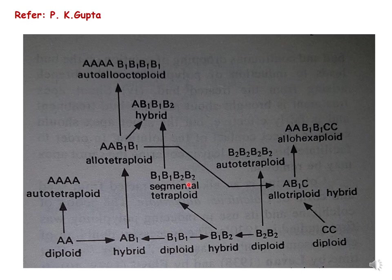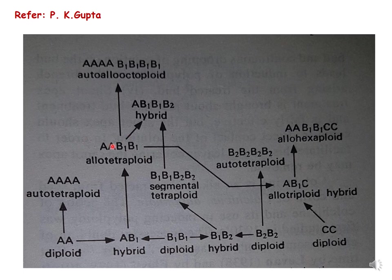Suppose we hybridize this segmental tetraploid and the allotetraploid — this hybrid will have chromosome composition A, B1, B1, B2, giving four sets of chromosomes, so it will be a tetraploid and specifically an allotetraploid. Also, diploid B2B2 has given rise to an autotetraploid, and when hybridization takes place between this allotetraploid and diploid B2B2, an autotetraploid is formed. When hybridization takes place between the allotetraploid and the diploid, a triploid is formed — this is an allotriploid.